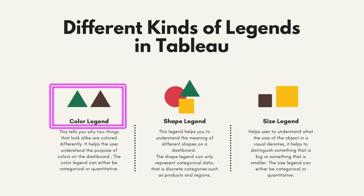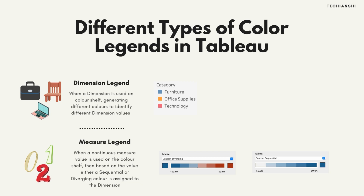Color legends can be further subdivided into dimension and measure color legends. When a dimension is used on a color shelf, generating different colors to identify different dimension values, that's called a dimension legend. However, when you use a continuous measure value onto your color shelf, that is a measure legend. Based on the value of the measure, a sequential or a diverging color is assigned to the dimension. This helps in understanding the range of values using the colors.